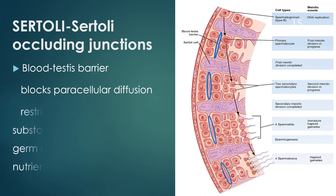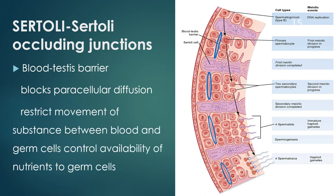The blood-testis barrier blocks paracellular diffusion and restricts the movement of substances between the blood and the germ cells, controlling the availability of nutrients to the germ cells.